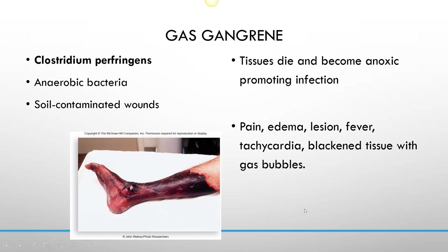Symptoms include pain, edema, lesion, fever, tachycardia (an increase in heart rate), blackened tissue, and when you push on it, gas bubbles come out of the wound opening. In a video I posted, the doctor refers to it as a necrotizing infection and even calls it cellulitis, but what it's actually showing is gas gangrene — the blackened tissue and gas bubbles coming out of the wound. In necrotizing fasciitis the tissue usually opens wide, while in cellulitis it remains closed with just reddening underneath the connective layers. In gas gangrene, you actually see it turn necrotic and die — this is a very serious infection.